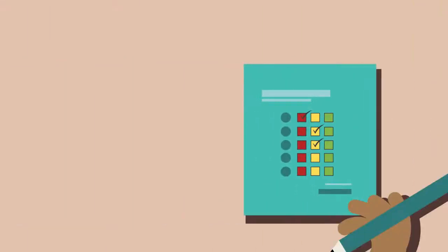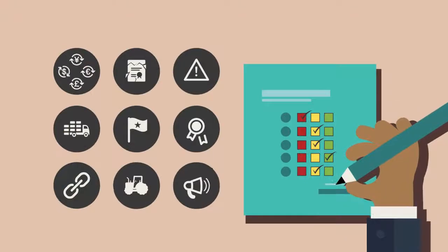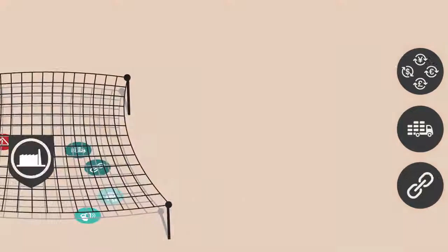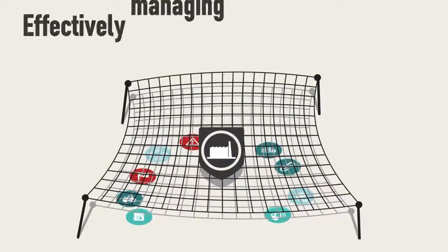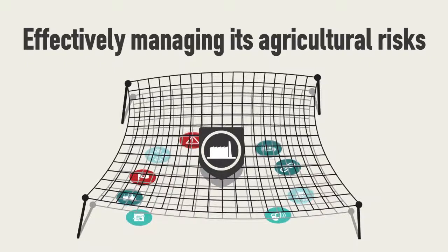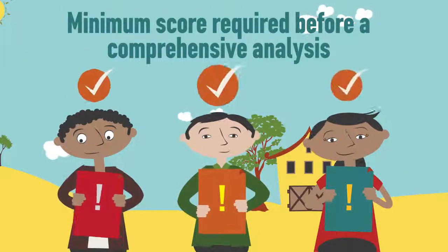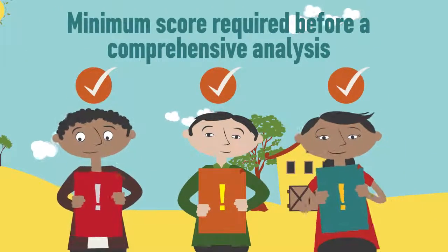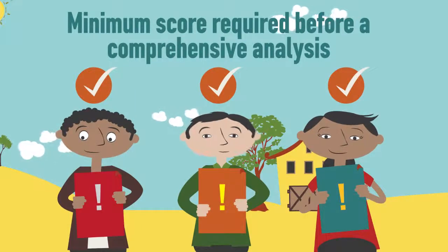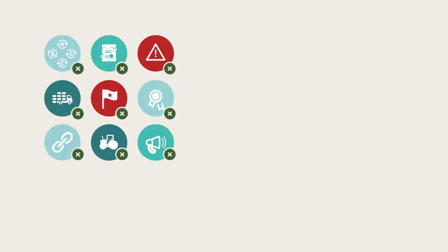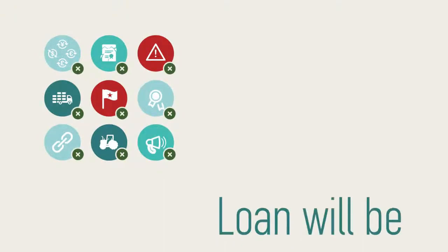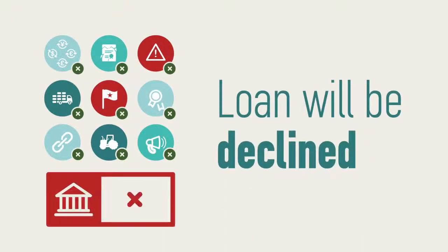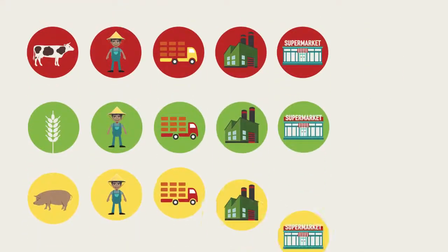After completing the template, the loan officer arrives at a score that indicates whether the agribusiness is effectively managing its agricultural risks. If they achieve the minimum score, the loan officer conducts the traditional risk assessment process. If the agribusiness is seen to be insufficiently managing its agri-risks, the loan will be declined irrespective of the traditional assessment process.